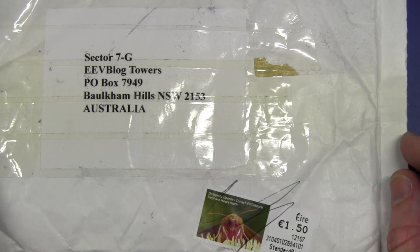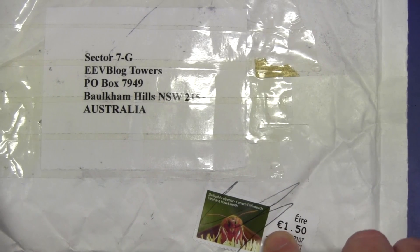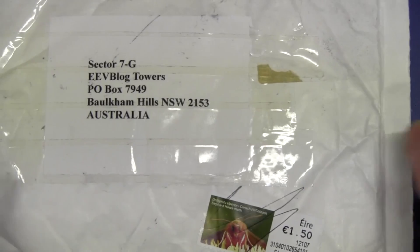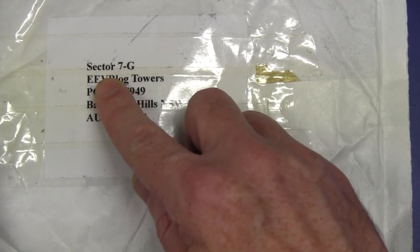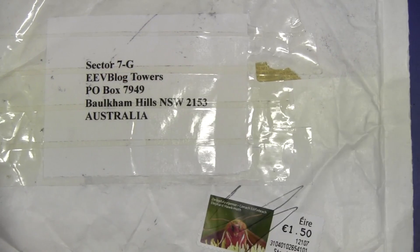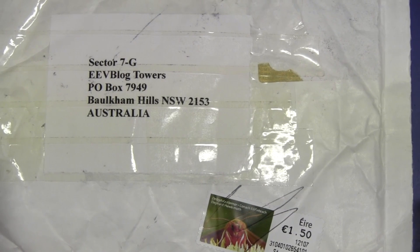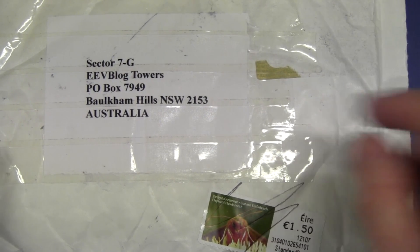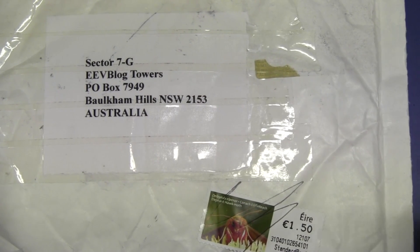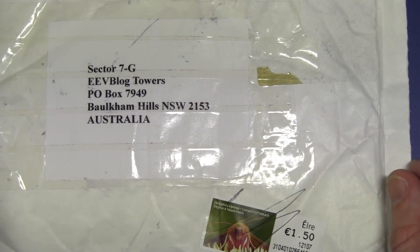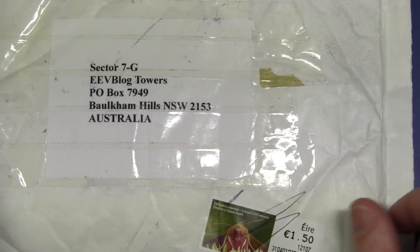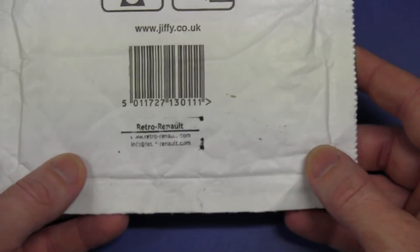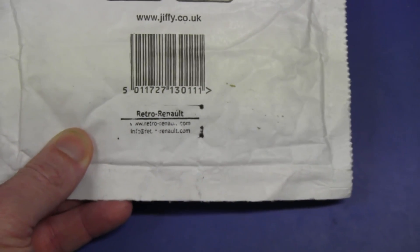Now the first one here is from somewhere in Europe. It's got 150 euro here. Didn't cost much at all. It must have been sent as a letter instead of a parcel. And check it out. It's addressed to Sector 7G. And if you don't get the reference, Google it. Of course, it's amazing it found its way here at all to the EEV blog towers bigger than the Empire State Building. It's huge.